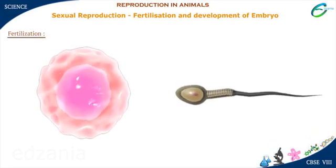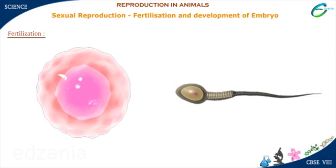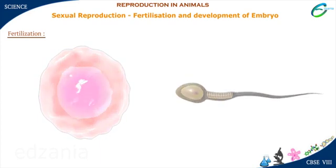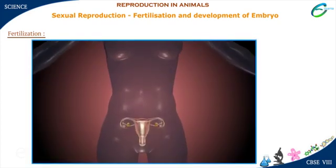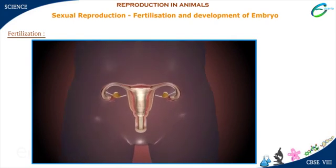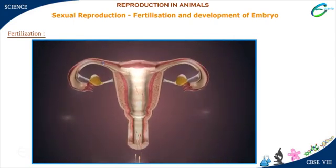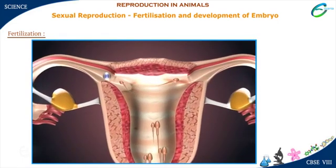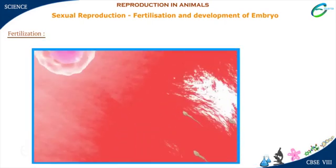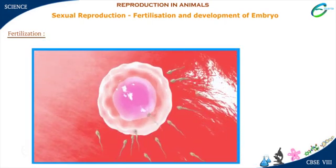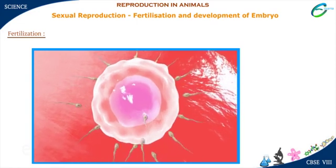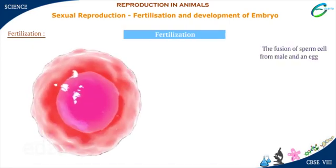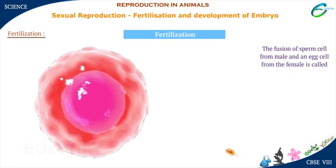What is the role of sperm and an egg cell in reproduction? How does reproduction take place? The sperms from the male are released into the cervix of the female reproductive system. The sperms travel from the cervix to the fallopian tube where the female egg cell is present. When sperms come into contact with the egg cell, out of millions of sperms, only one sperm is able to fuse with the egg cell. The fusion of sperm cell from male and an egg cell from the female is called fertilization.